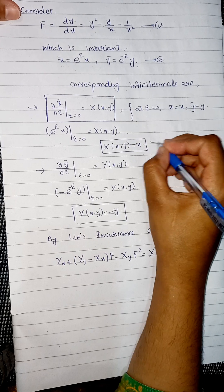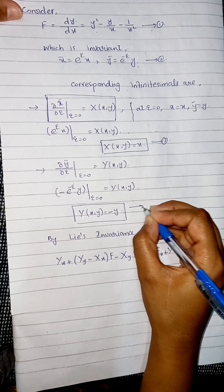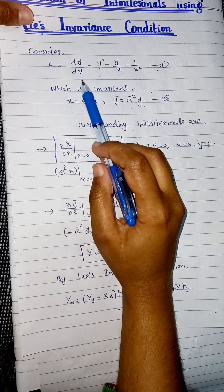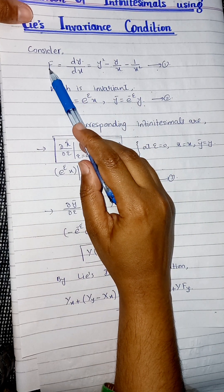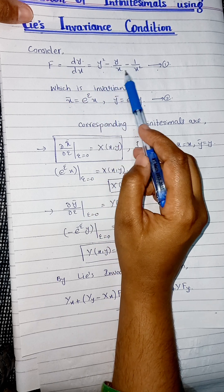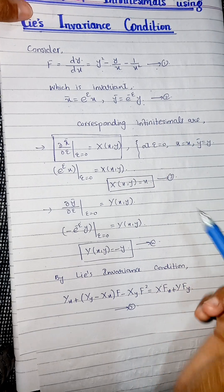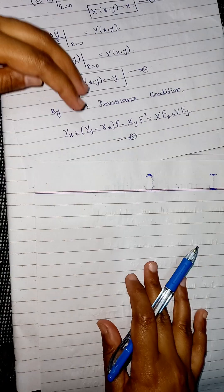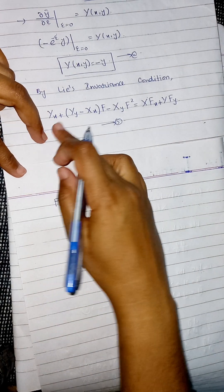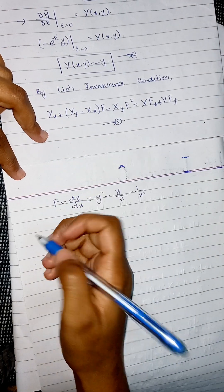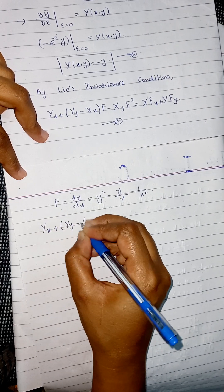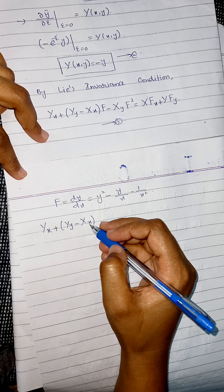Our task is to substitute equation number two, equation number three, and equation number four into equation number five. The value of capital F is our given first order ODE: y squared minus y over x minus 1 over x squared. I will first substitute the values of F and F squared into equation number five.